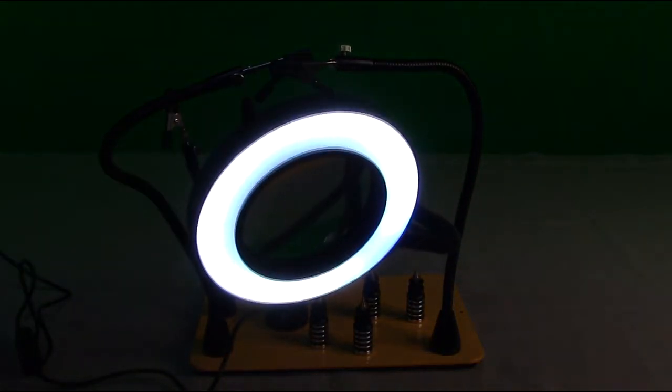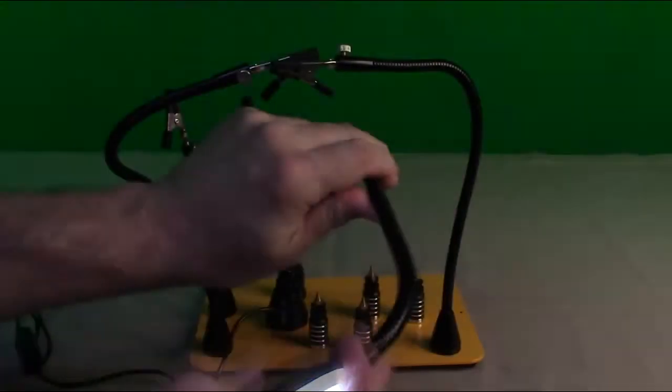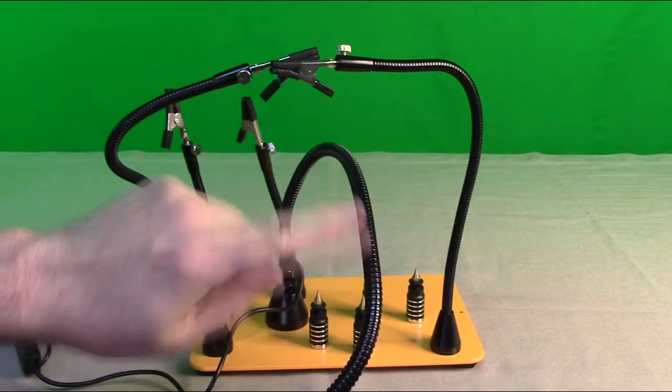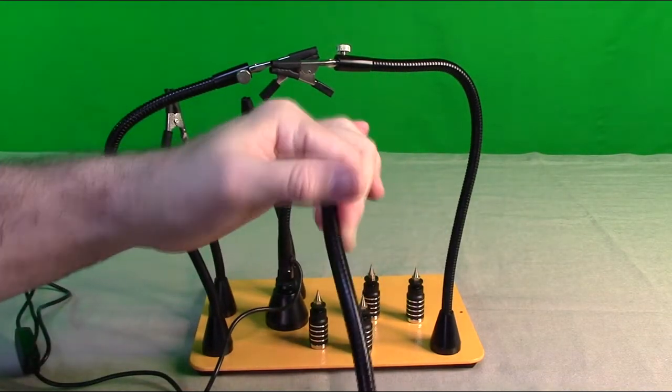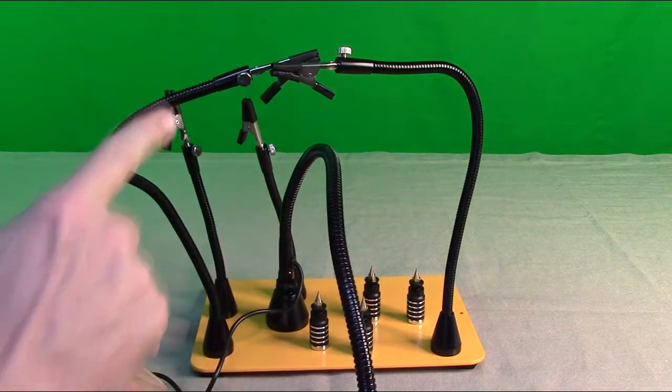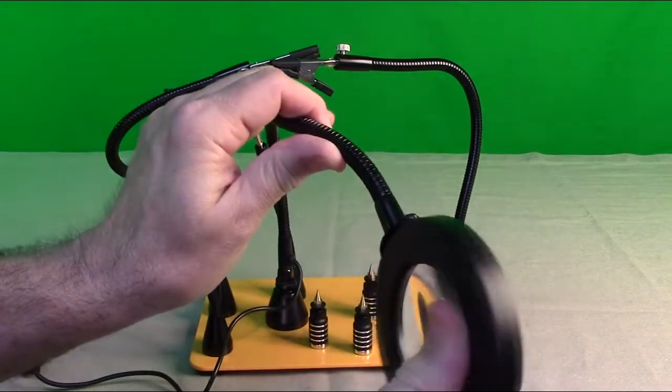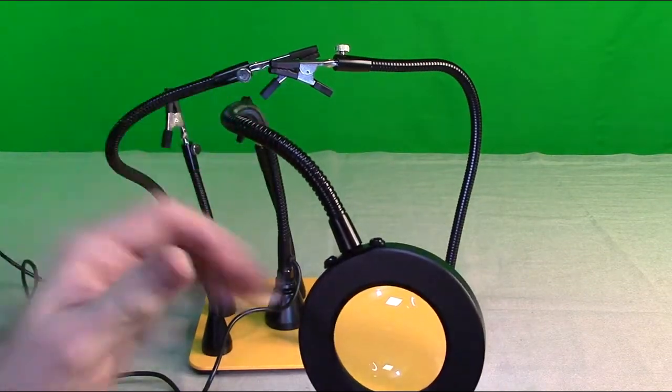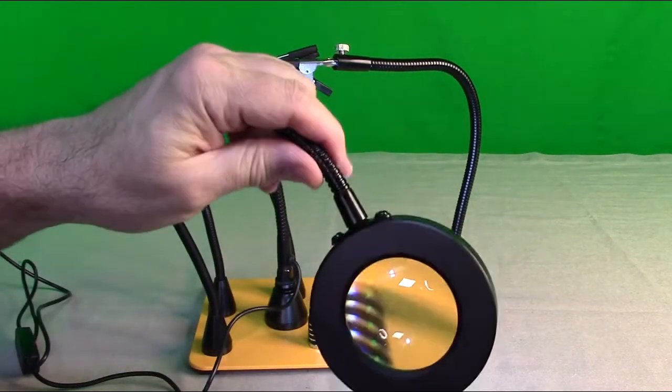They have this gooseneck type of metal on there—I don't know how to describe it—but it's on all these pieces. It's a larger diameter than these ones because it's supporting more weight on there, but it just works really well. It keeps it right in place.